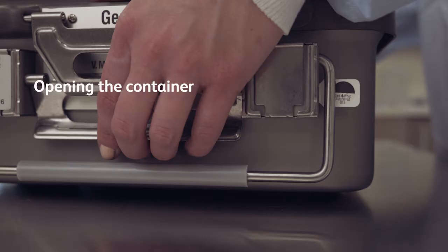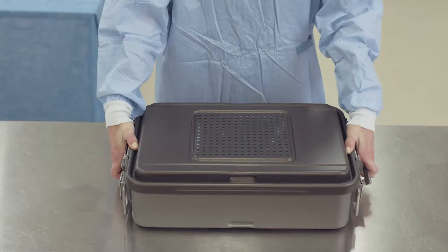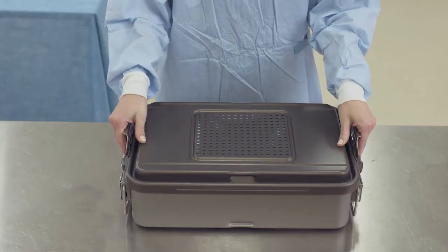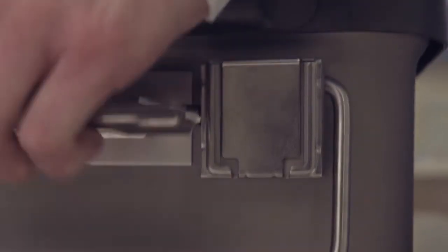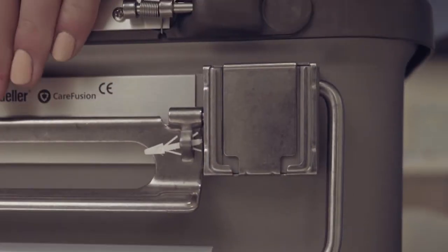To open the container, place your fingers under the bottom latch on both sides of the container. Gently pull upward and outward on the bottom latches. This motion disengages the lid from the bottom and breaks the tamper-evident arrows.